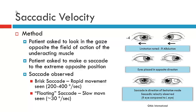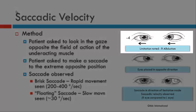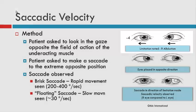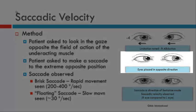So how do we perform the test? Obviously, you'll first have to have done an ocular movements assessment and you will have noted that there was an underaction of an extraocular muscle. In the example we have here, we have a patient with a right abduction limitation — the lateral rectus would be documented as underacting. When we measure saccadic velocities, we first ask the patient to look into the opposite direction of the field of action of the underacting muscle.